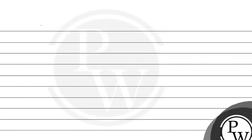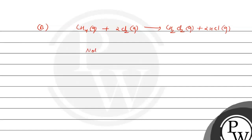Option B: CH₄ gas plus 2Cl₂ gas forms CH₂Cl₂ gas plus 2HCl gas. Here, the products are not forming from their elements in standard form. CH₄ gas is not in its standard elemental form and Cl₂ is a reactant compound here, so Option B is also incorrect.